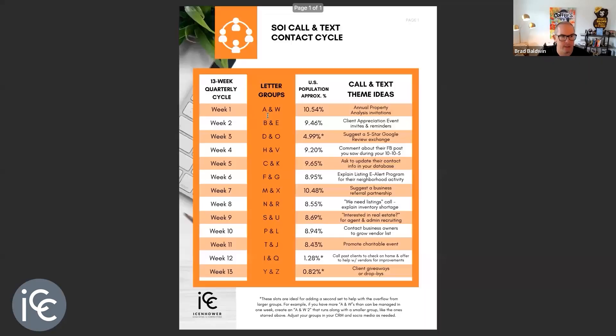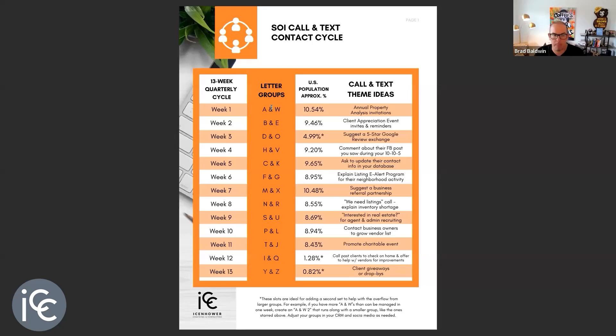There are four laws to the database: number one, organize it; number two, systematically talk to it; three, feed it every day; and four, convert the leads out of it. This video is about organizing your CRM. The last names of the U.S. population are categorized by percentage. This isn't something I dreamed up — it's been around for a while, and quite a few people have used this system. It's a very clever, neat way to organize and keep everything tidy in your CRM.